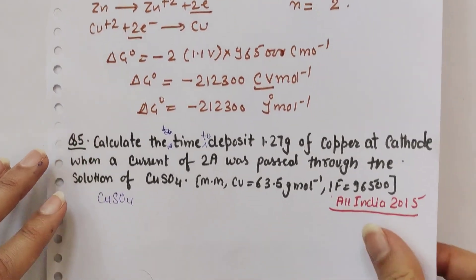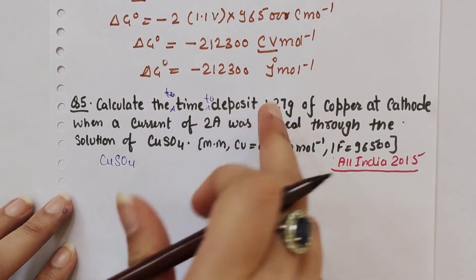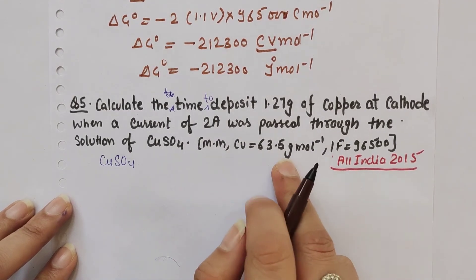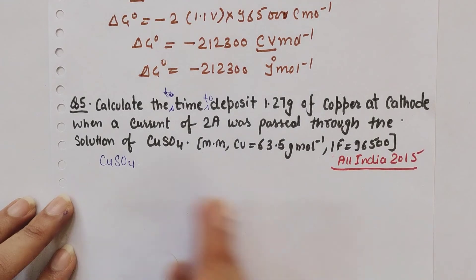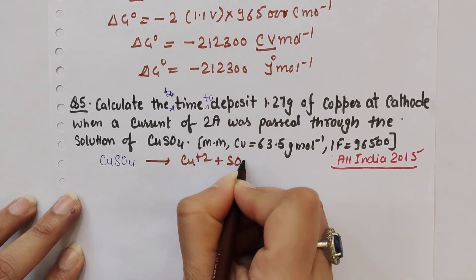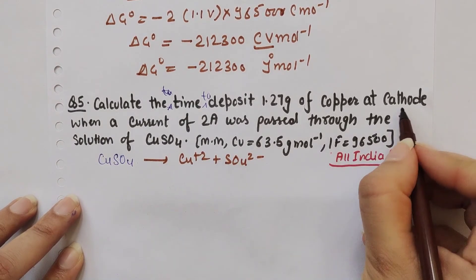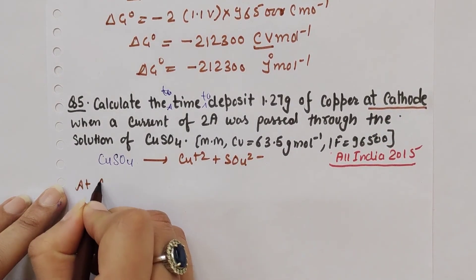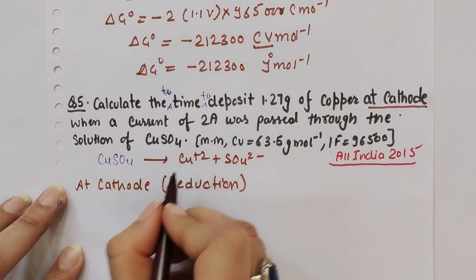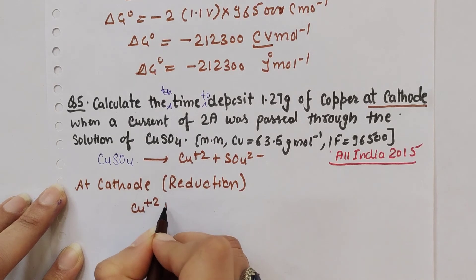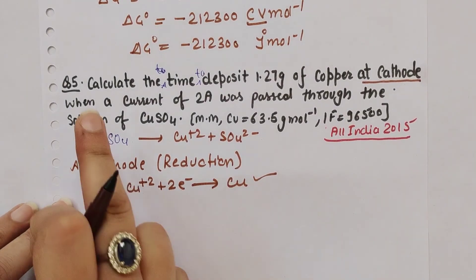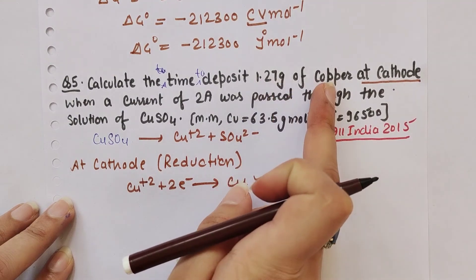Next question: Calculate the time to deposit 1.27 g of copper at cathode when a current of 2 amperes was passed through a solution of copper sulfate. The molar mass of copper is given, and 1 faraday is 96,500 coulombs. At cathode, reduction happens - copper gains electrons: Cu²⁺ + 2e⁻ → Cu.